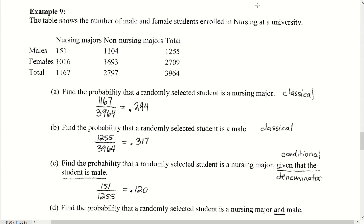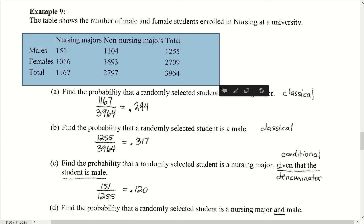In section 3.2 we'll now look at example 9. This is a very common style of problem within probability dealing with probability based upon a stratified table. In this particular table we have a population broken up into two different types of strata: gender — male and female — and the type of major, whether it's nursing majors or non-nursing majors.